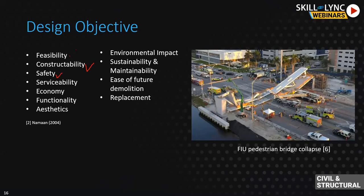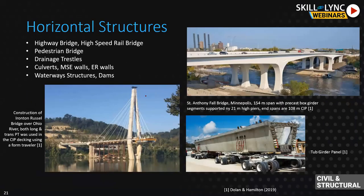Probably the most important design considerations include constructability - it has to be feasible and must account for location and material constraints. Safety is also critical: in the FIU collapse, among all the checks, strength failed causing the collapse, but safety was also undermined because traffic was allowed while the structure was being erected. Six lives were lost. Serviceability, economy, functionality, aesthetics, and ease of future demolition and replacement are all key design objectives.